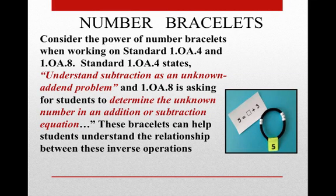When we think about number bracelets, we're thinking about the parts and the whole. One place it can be really powerful is when we start talking about the unknown addend problem. When we look at our bracelet, we have a whole of five — we could cover up two, and that's the missing addend. Five equals something plus three, for example. What is the unknown? What is the other part that I'm hiding? This is a great tool to connect to that unknown number, because it then leads into the subtraction equation of five minus three equals two as well.